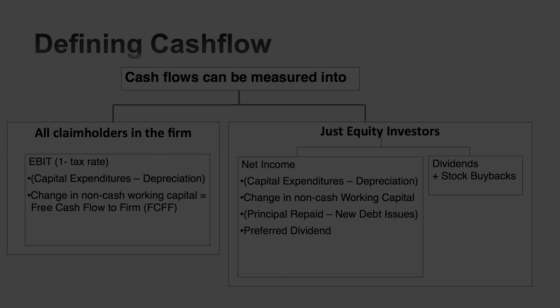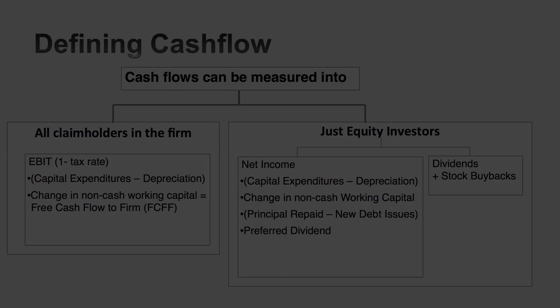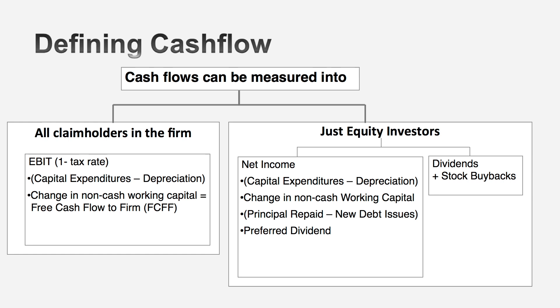The first thing you need to do when estimating cash flows is to decide who you're estimating the cash flows to. There are two ways you can estimate cash flows. One is cash flows to equity investors, which are cash flows left over after debt payments. The other is the cash flow to the entire business. Cash flows to equity investors can themselves be estimated in multiple ways. The simplest and oldest way is to look at what equity investors receive in dividends — that's the old dividend discount model.